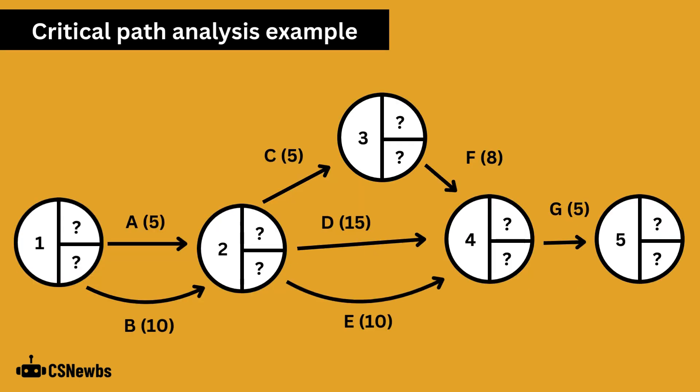This example has five nodes representing five milestones of a project, starting at one and finishing at five. There are seven activities represented by the letters A through G, each with a time estimate in brackets, and let's say that refers to days. The earliest start time of the first node is always zero.